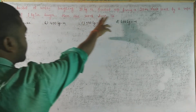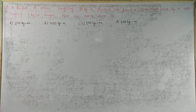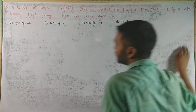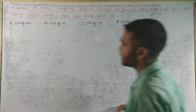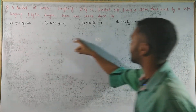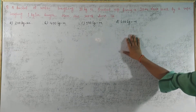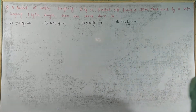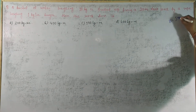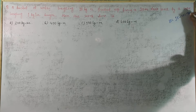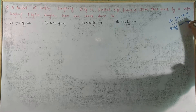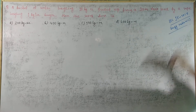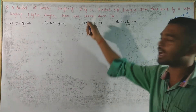A bucket of water weighing 10 kg is pulled up from a 20 meter deep well by a rope weighing 1 kg per meter length. The work done is: option A) 200 kg·m, B) 400 kg·m, C) 500 kg·m, D) 600 kg·m. Hello Dears, our topic is Technical MCQ. This question is from SSEJE 2017, engineering mechanics.